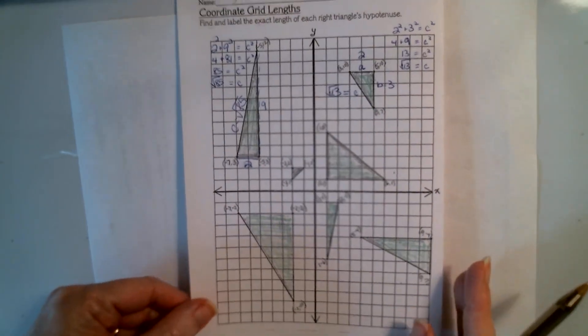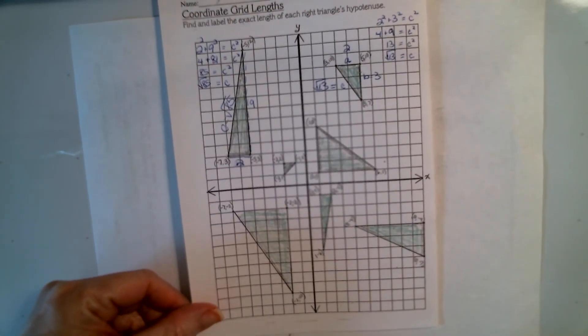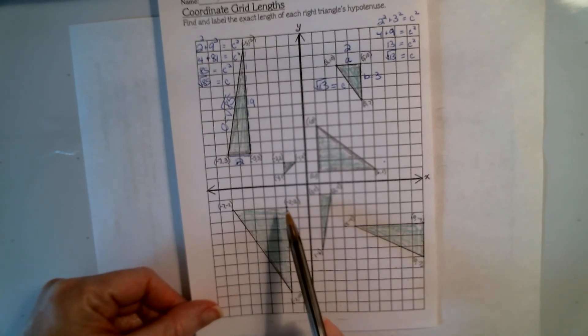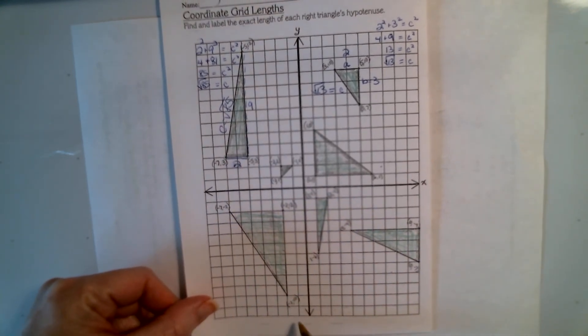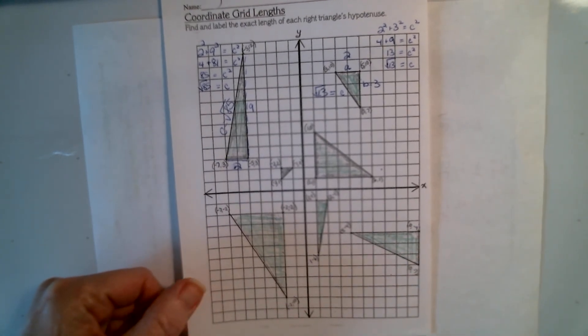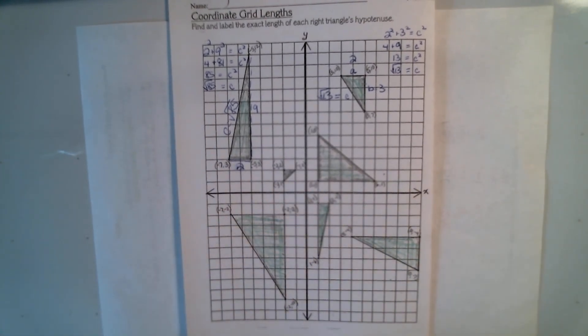But what if the grid was gone? How would we count that length? So the key is looking at these ordered pairs. So be thinking about that as you go through and practice these, and then we'll come back and do the other side together.